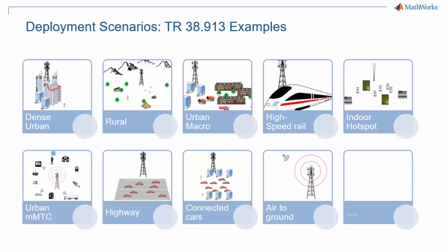Possible deployment scenarios are listed in Technical Report 38.913. Contrary to what people naturally think of when hearing about 5G, not all scenarios are high-speed small cells, as you can see here. Scenarios range from indoor to rural, with urban cells, air-to-ground, and connected cars as potential applications.